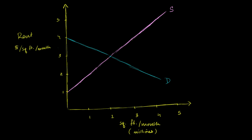Let's think about the market for real estate in a given city. Here on the vertical axis, I have plotted rent in terms of dollars per square foot per month. Here on the horizontal axis is essentially the quantity of square feet per month available in millions.